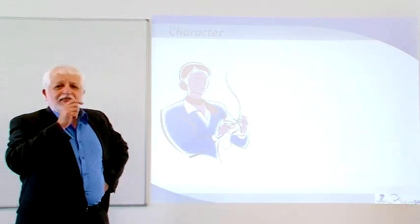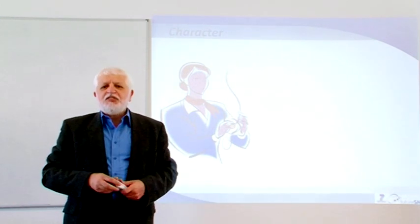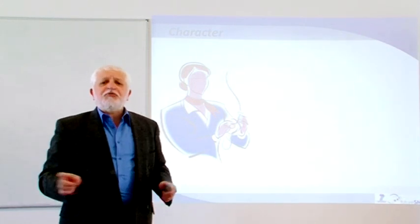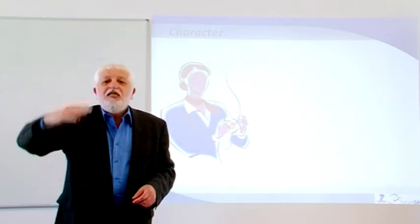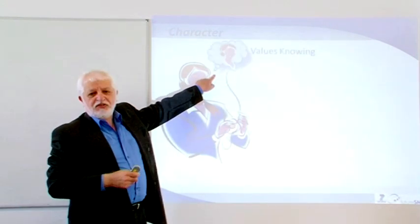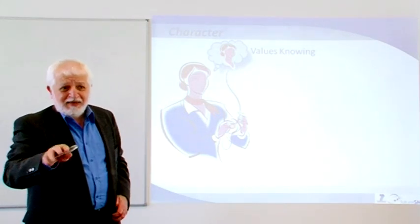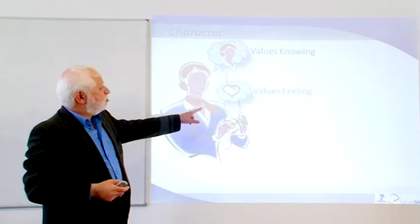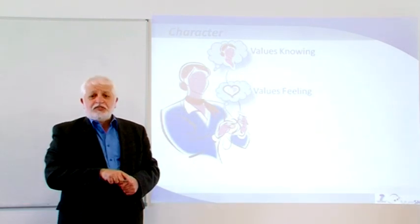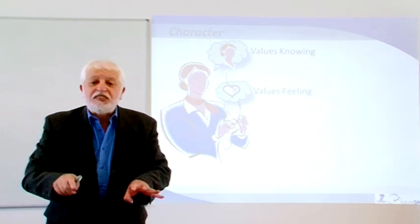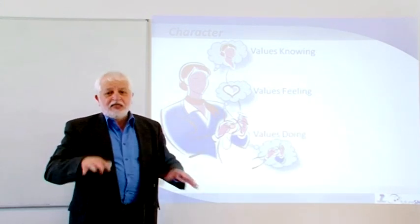Now, interestingly, they did some research and they asked students, how many of you think that cheating is wrong? In these schools, they put a tremendous amount of emphasis on character development. Without exception, everybody put their hands up that they think cheating is wrong. They realized that the students know their values at the head level, value-knowing. Then they asked the second question, how many of you don't want to cheat? In this case, about 80% of the students put their hands up. That shows that they had a feeling for values, but probably were not fully implementing it. Then they asked the last question, how many of you actually don't cheat? This time, only 20% of the students put their hands up, and this shows value doing. They do their values.